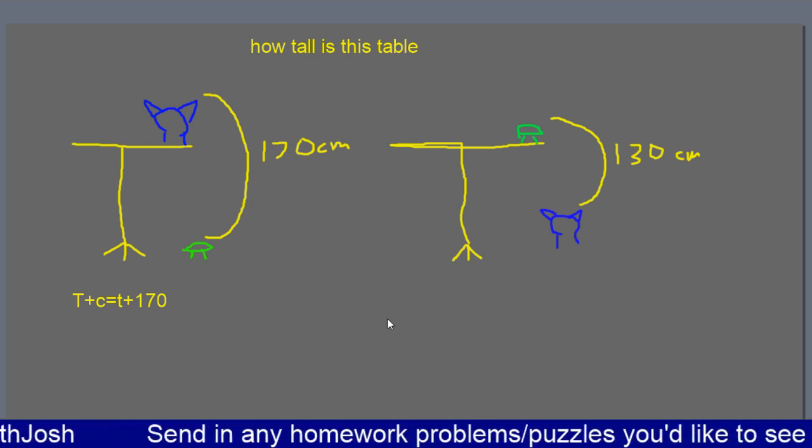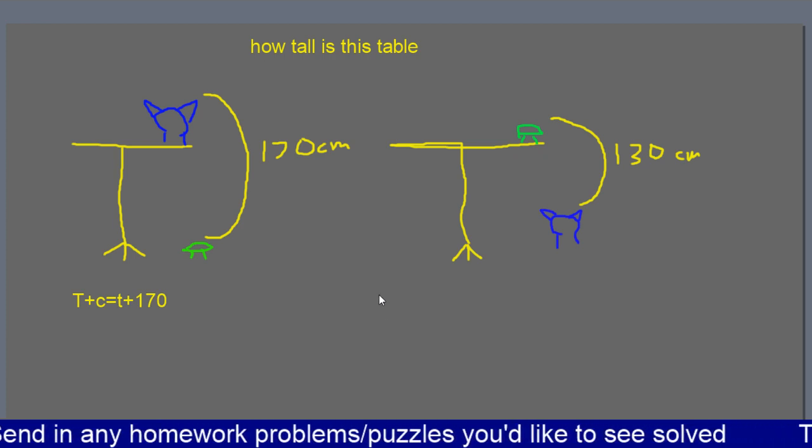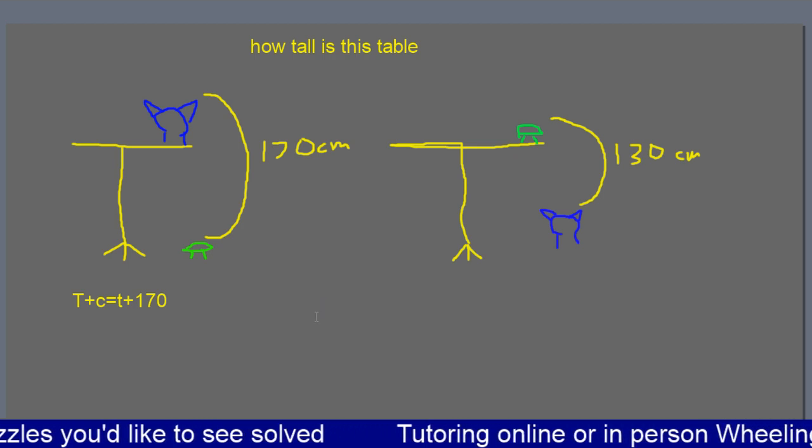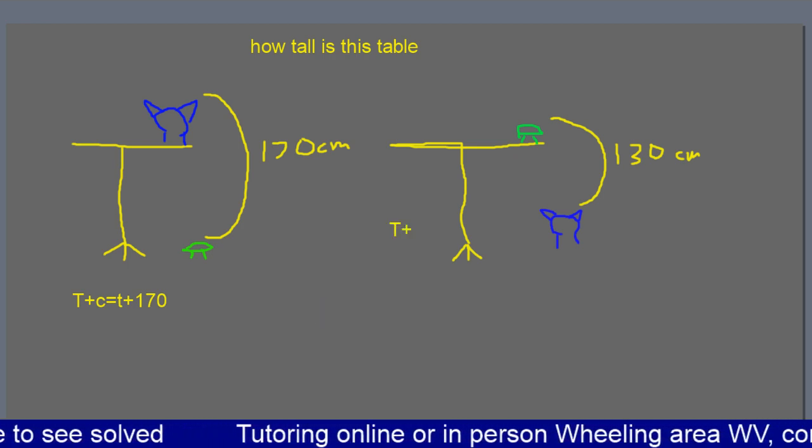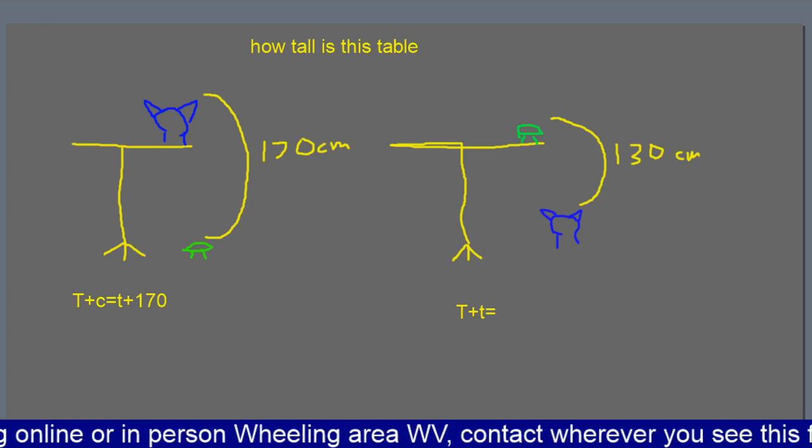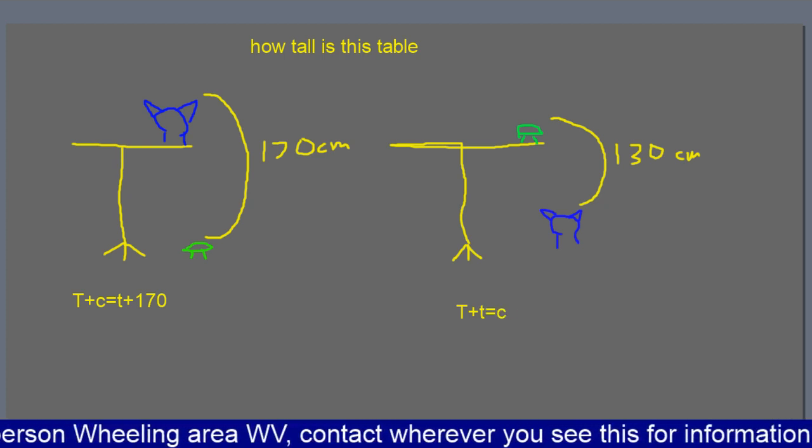And secondly, the second equation here is that over on the right side, the table height plus the turtle's height equals the cat's height plus 130.